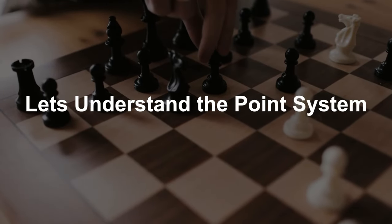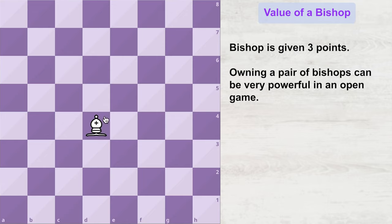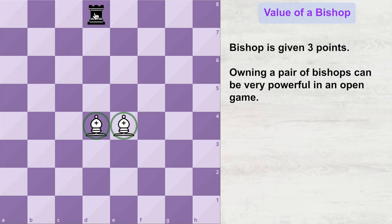Let's understand the point system. In a game of chess, each bishop is valued at three points. But if you own a pair of bishops and your opponent has just one rook against your two bishops, then these two bishops might prove more powerful than the opponent's rook. Firstly, they are worth more in points — three plus three adds up to six, while a rook is only five points. Secondly, if two minor pieces work in coordination, they can often prove stronger than one major piece on the chess board.